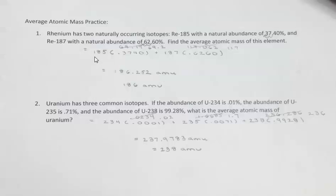So when you do this, you multiply the mass, so 185 times its natural abundance, which is 0.3740. And then you add that to the other mass, which is 187 times 0.6260, because that's its natural abundance. So first find the answer. Before you deal with sig figs or anything like that, find the answer. So I got 186.252 AMU.